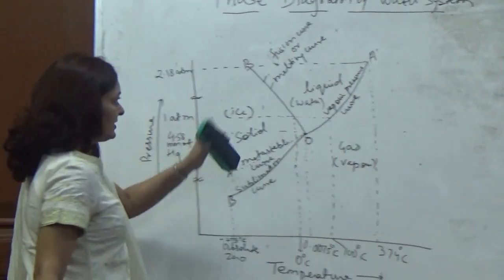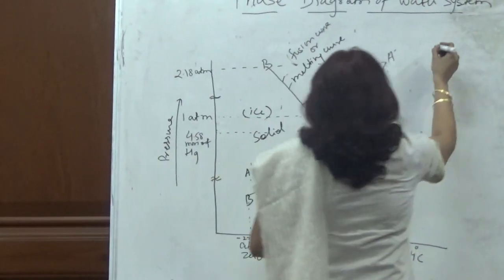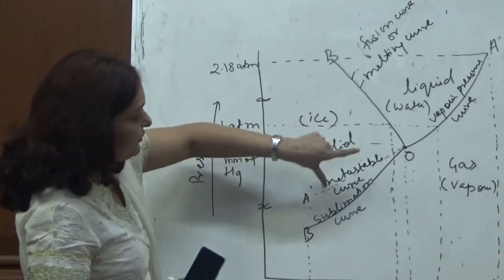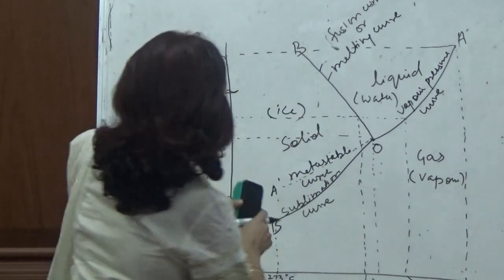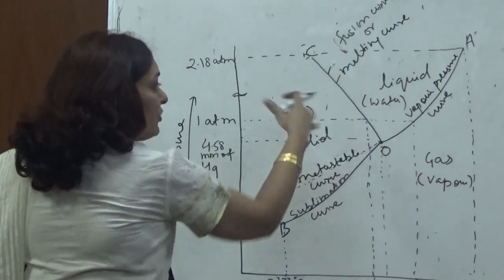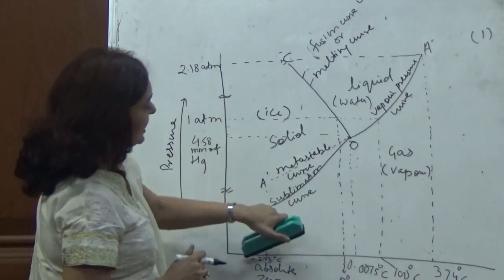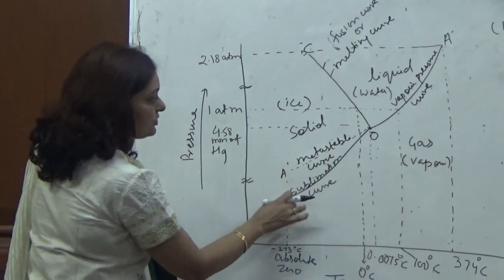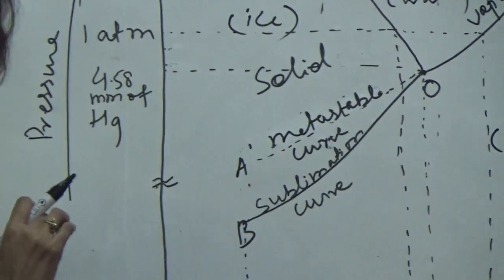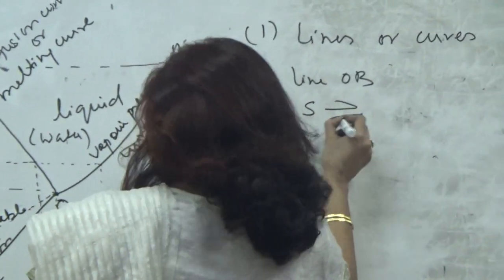In the three phases, this phase diagram is divided into different parts. The first part is about the lines or curves. You can see in this diagram there are different lines or curves: line OB, line OC, and line OA. We have to know on which factor — either pressure, temperature, or concentration — each line depends. Looking at curve OB, two phases are in equilibrium along this line: solid is in equilibrium with the vapor.